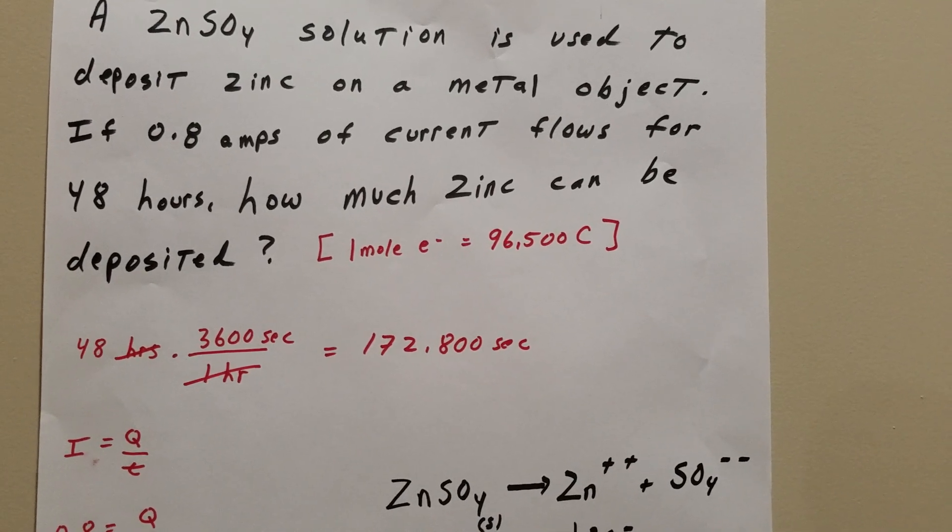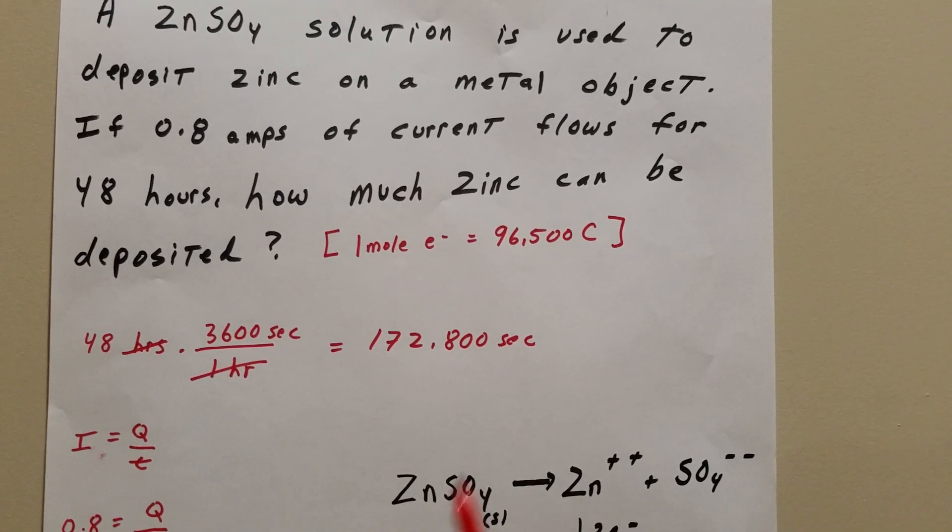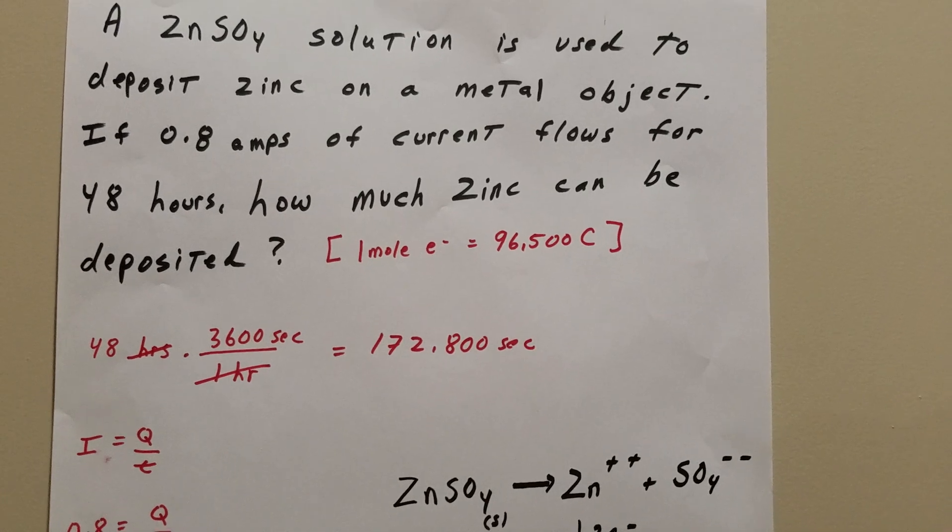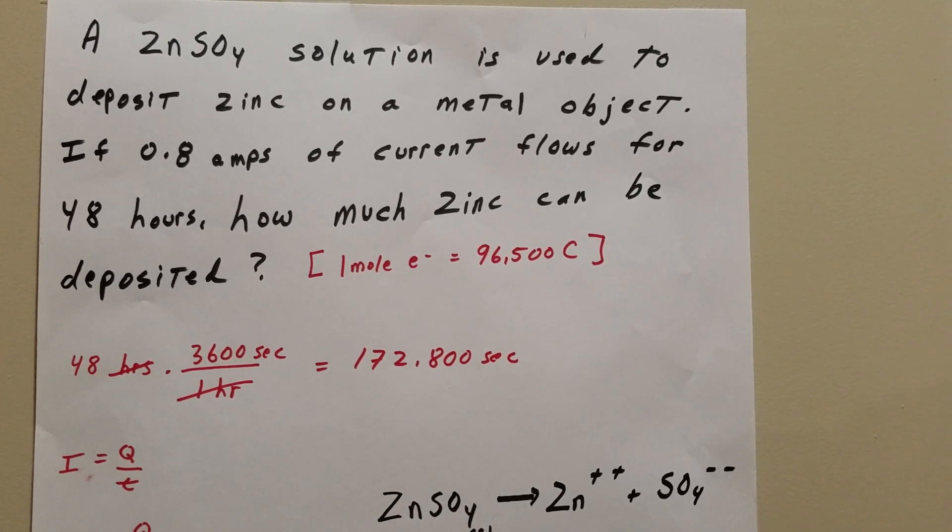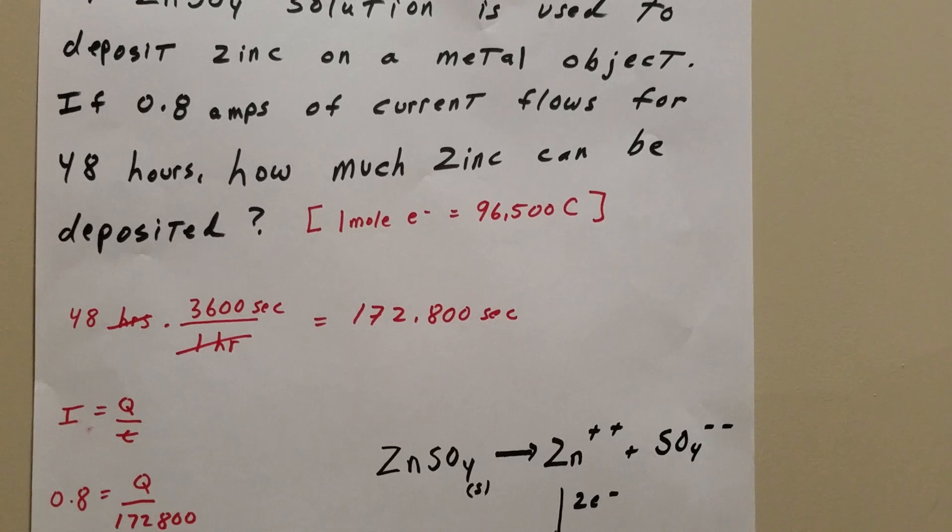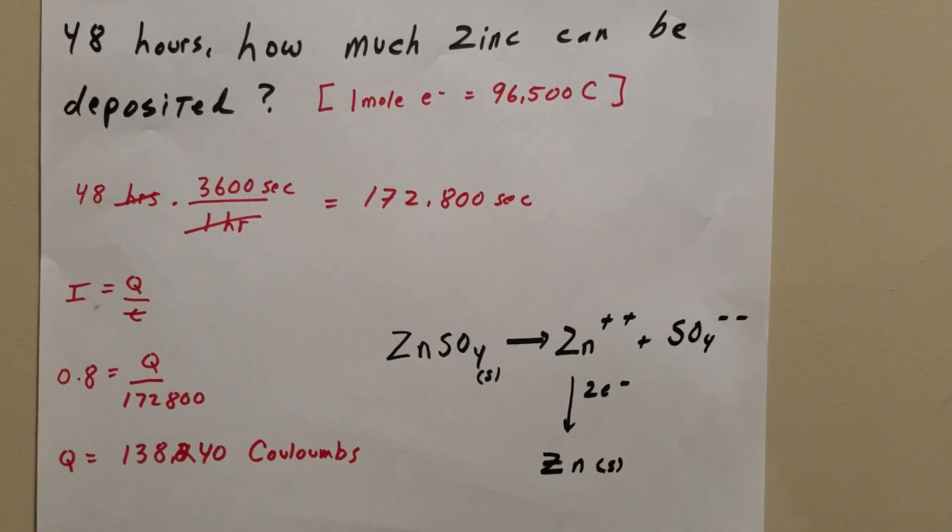Anytime you get a problem in electrochemistry, the first thing I'm going to do is convert hours into seconds. Don't worry about the numbers here. When you do this problem, do it with a calculator for the DAT exam.